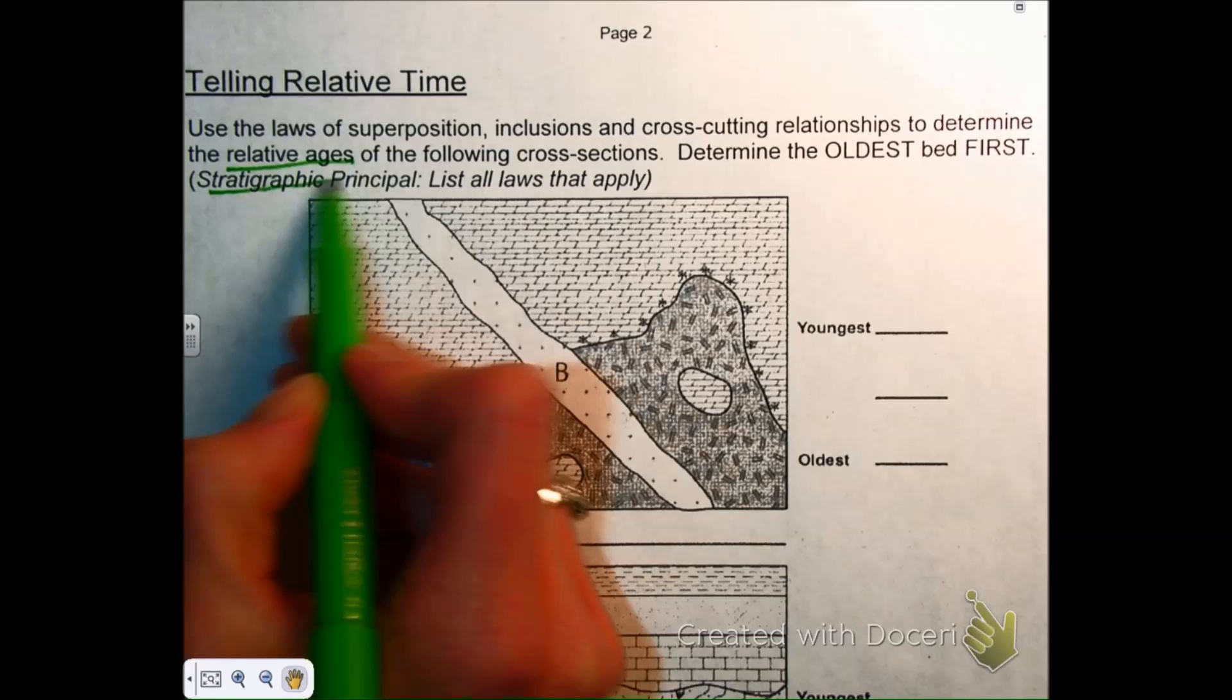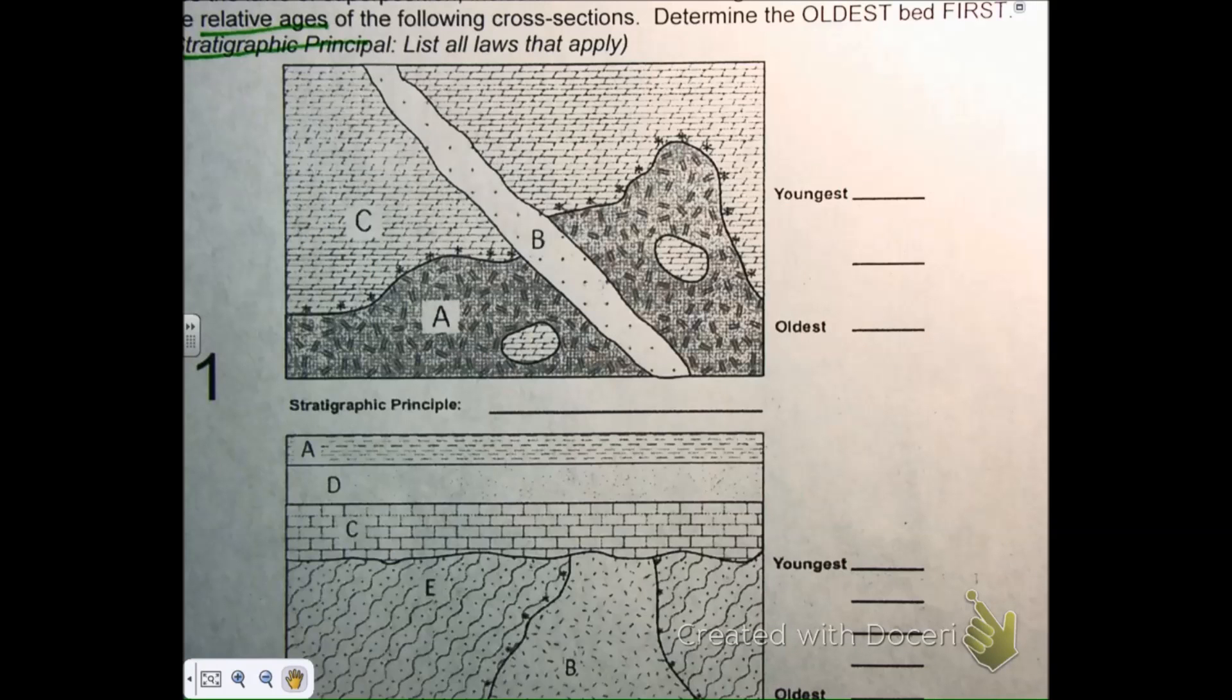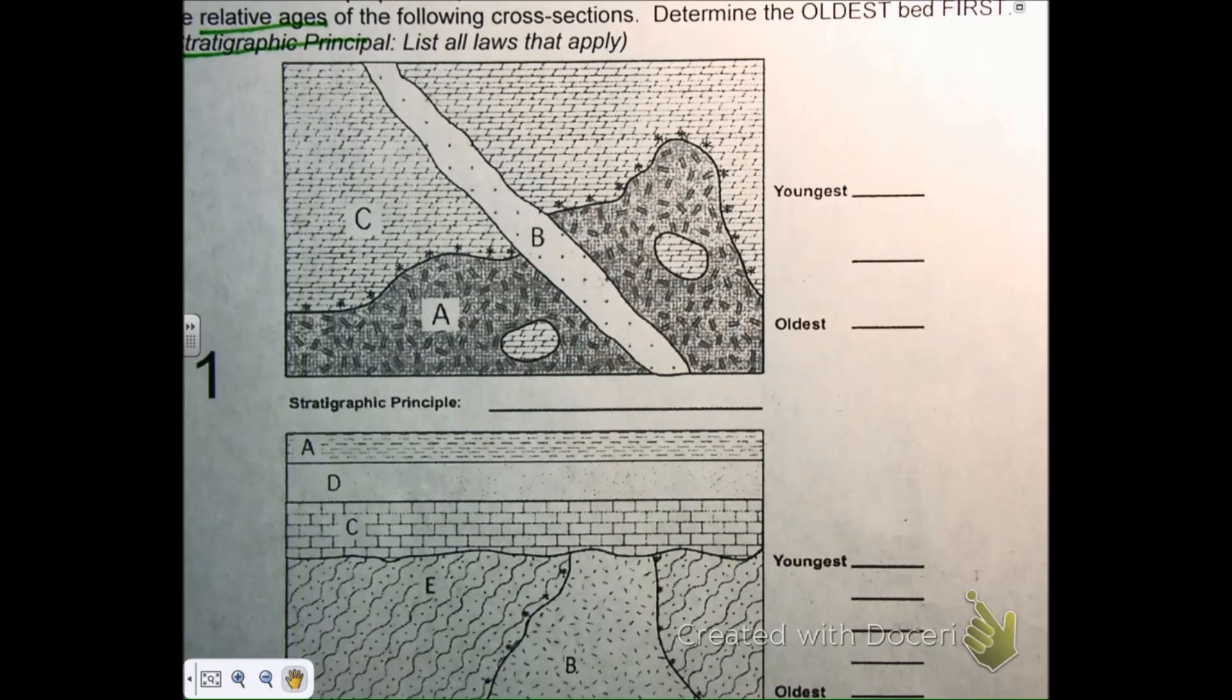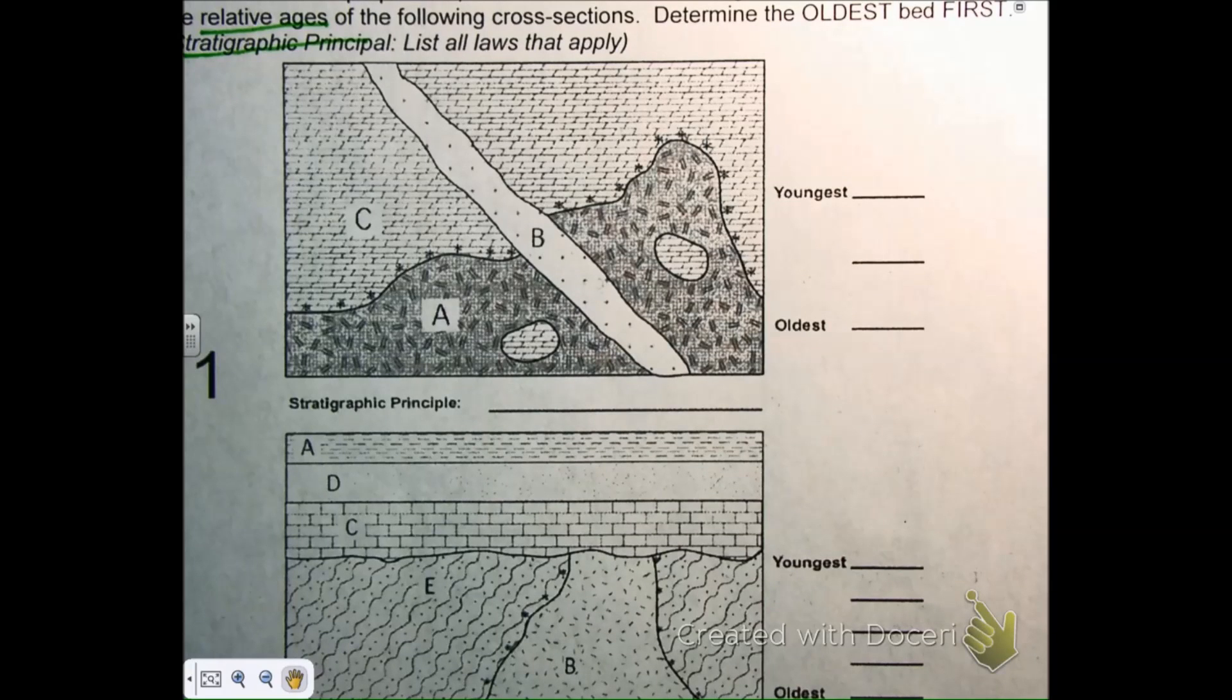So let's look at number one first. We've got three layers. That's pretty easy to start with. Who would like to tell me which layer would be the oldest layer and which stratigraphic principle you're choosing, or which law you're choosing to demonstrate that? Which is the oldest layer and why? What do you think, Tony?